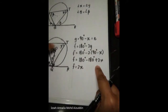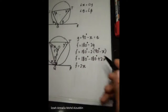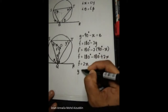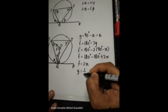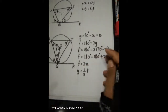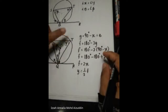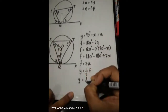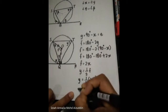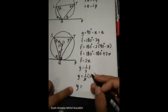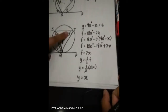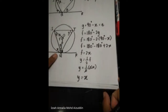This is the inscribed angle theorem — the angle at the centre is twice the angle at the circumference. So Y equals half of F. Since F equals 2X, that's why Y equals X. So this is how to prove that angle Y is equal to angle X.